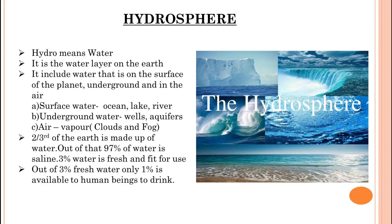The hydrosphere includes water on the surface of the planet, underground and in the air. Surface water is in the form of ocean, lake and river. Underground water is in the form of wells and aquifers.